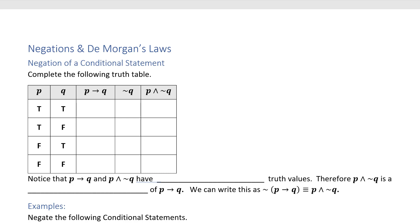Today's lesson is on negation and De Morgan's laws. The first thing I'm going to ask you to do is complete the following truth tables for 'if P then Q' and then 'P and not Q.' Let's go ahead and do these. For conditional statements, if the antecedent is true but the consequent is false, that's the only time the whole thing is false.